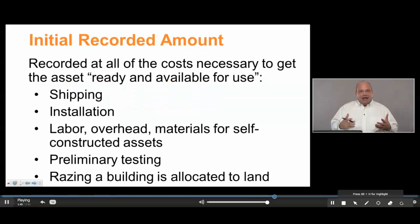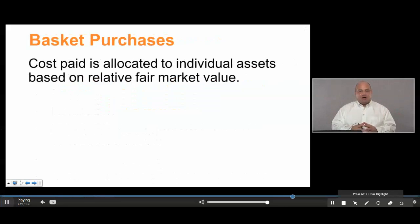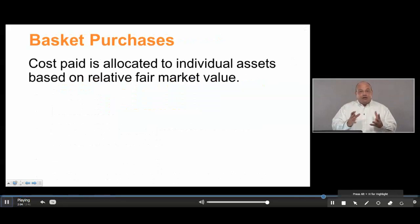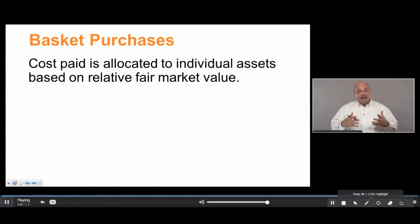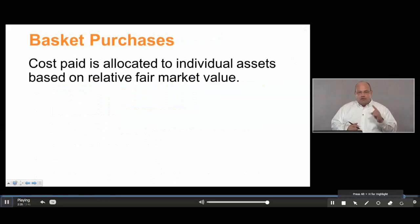That razing cost is allocated to the land that was purchased. We also have the situation of basket purchases, where a number of assets are purchased together. The total cost paid has to be allocated to those individual assets based on their relative fair market value. A common combination is land and a building — not one you need to destroy, but the office building sitting on that land. We take the fair market value of the land and the fair market value of the building, and allocate the price paid accordingly. So the acquisition cost includes all of the costs necessary to get that asset ready and available for use.